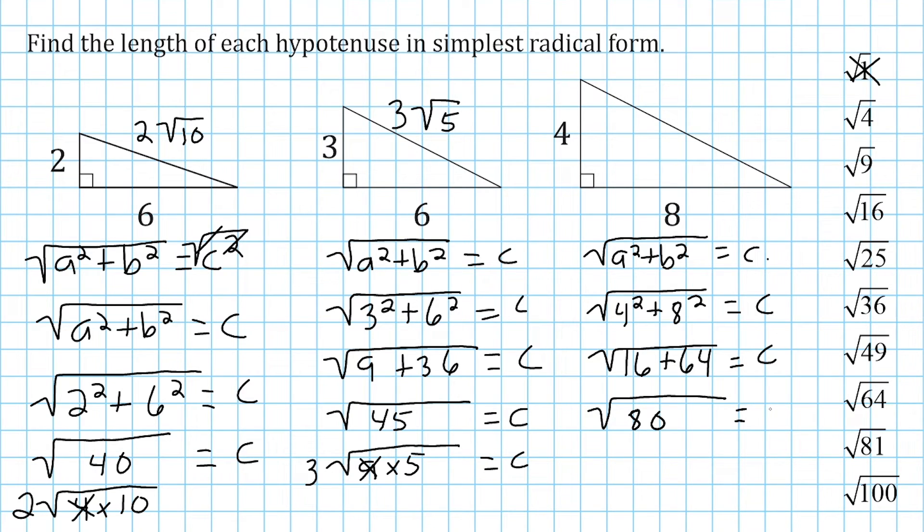So we have to break 80 down into the simplest radical form. So let's determine which of these perfect squares can fit into 80. Now, 4 could fit into 80, that would be 4 times 20. But let's see if we can find something larger than that. 9 cannot fit into 80. 9 can fit into 81, but not 80.